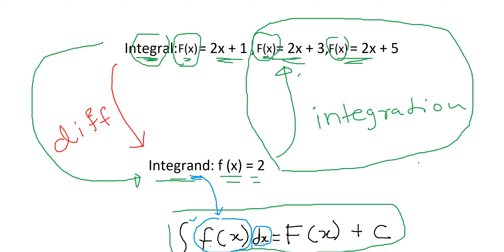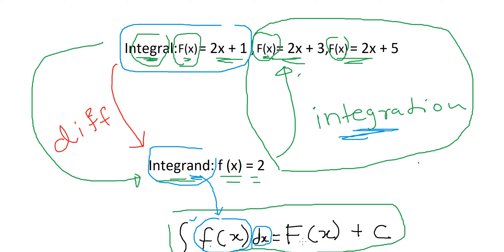The dx simply means x is the independent variable — x is the variable we are integrating with respect to. Remember, if you integrate the integrand you are going to get the original function, the integral. This is also what the symbol is telling you: after completing the integration process, you get the original function.